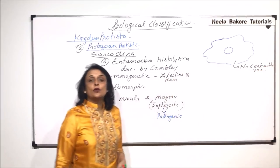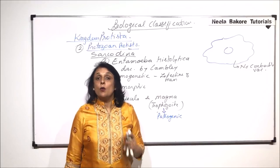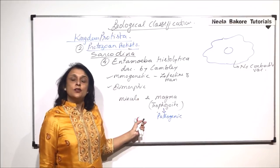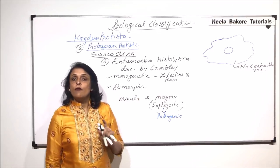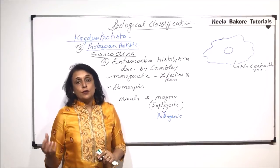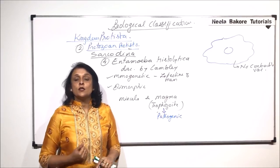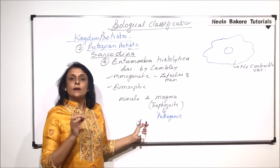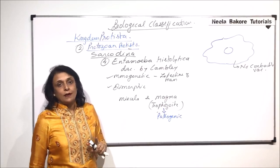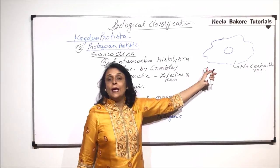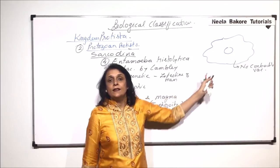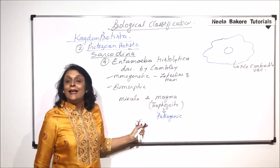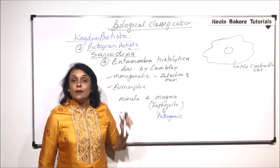The function of contractile vacuoles is osmoregulation, which is required when the outer environment changes — as seen in the case of amoeba, which is a freshwater organism. Entamoeba histolytica is found in the intestine, where conditions remain constant, so it does not need a contractile vacuole.